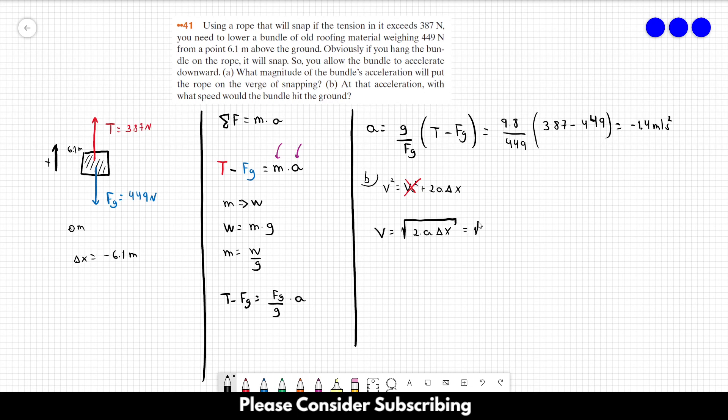So the final speed is equal to 2 times minus 1.4 times minus 6.1, which is equal to roughly 4.1 meters per second. So that's the answer of letter B.